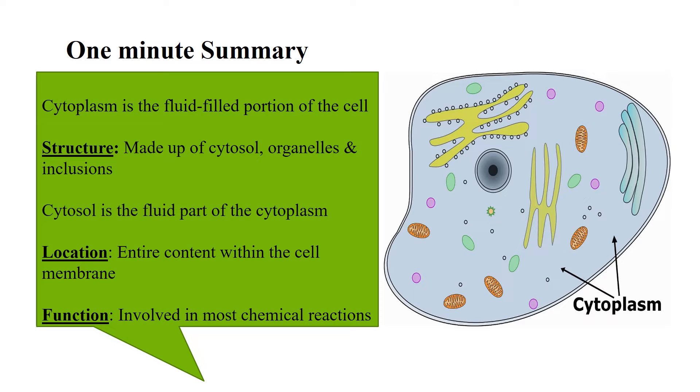The cytoplasmic organelles in a cell include the mitochondria, endoplasmic reticulum, Golgi apparatus, and others. The inclusions include carbohydrates, amino acids, lipids, enzymes, etc.